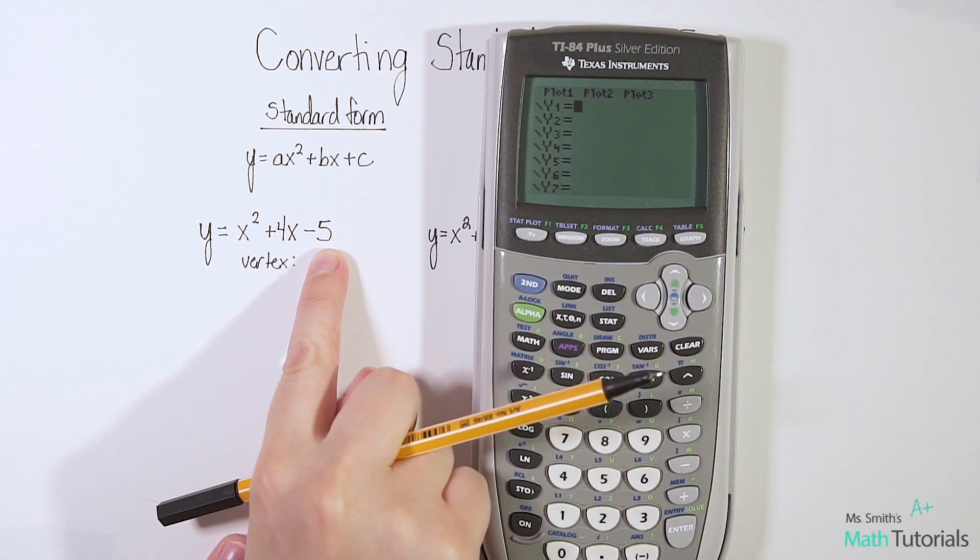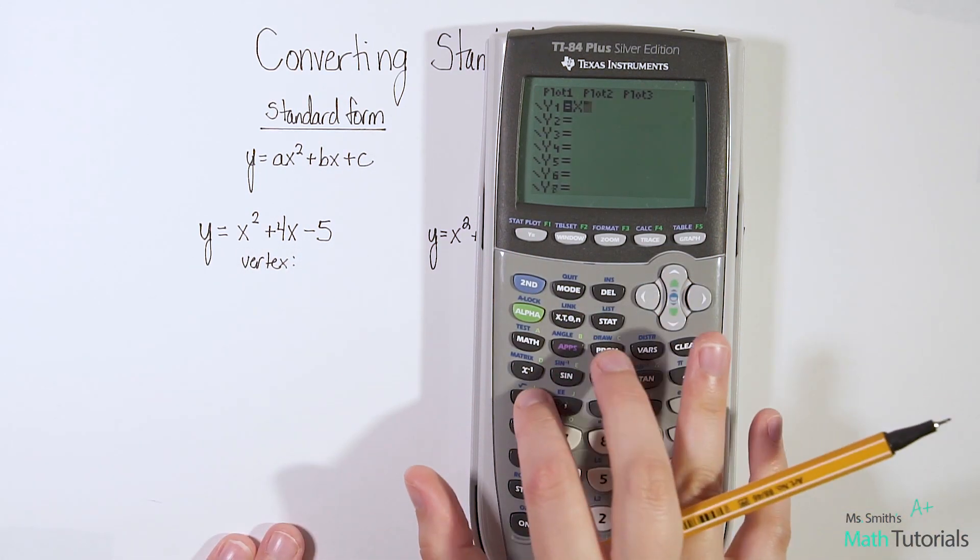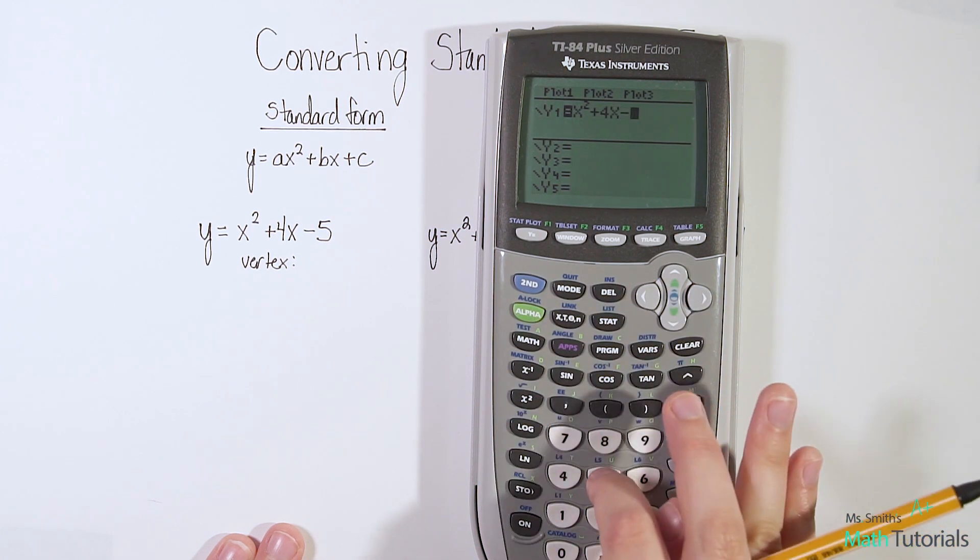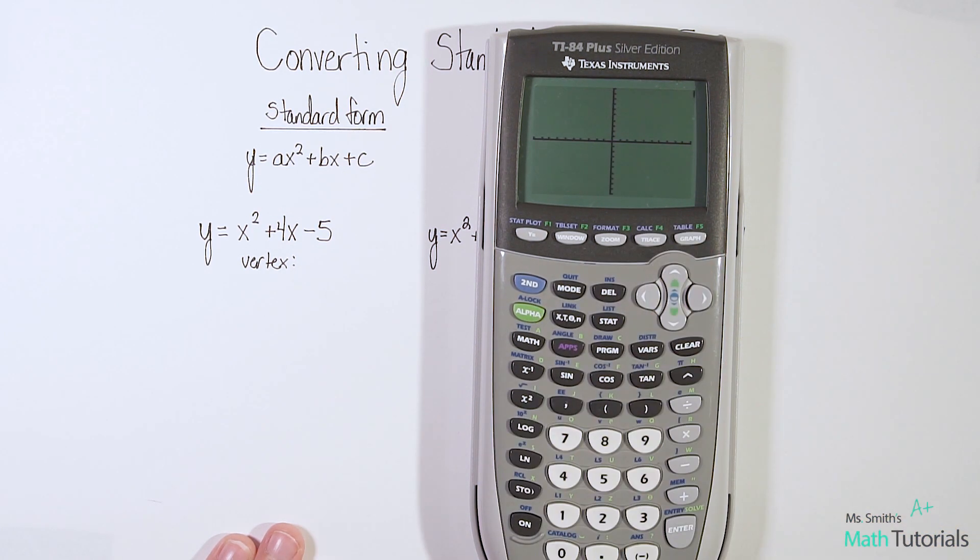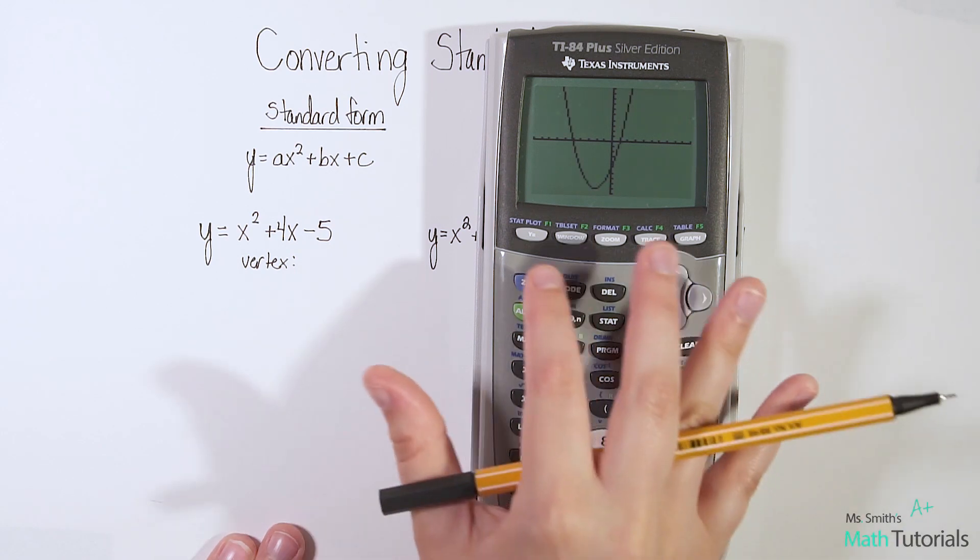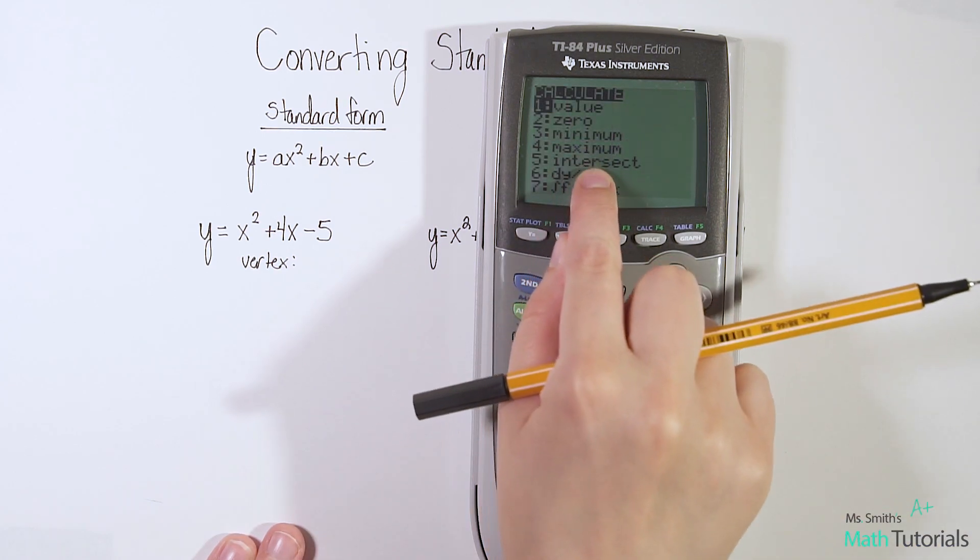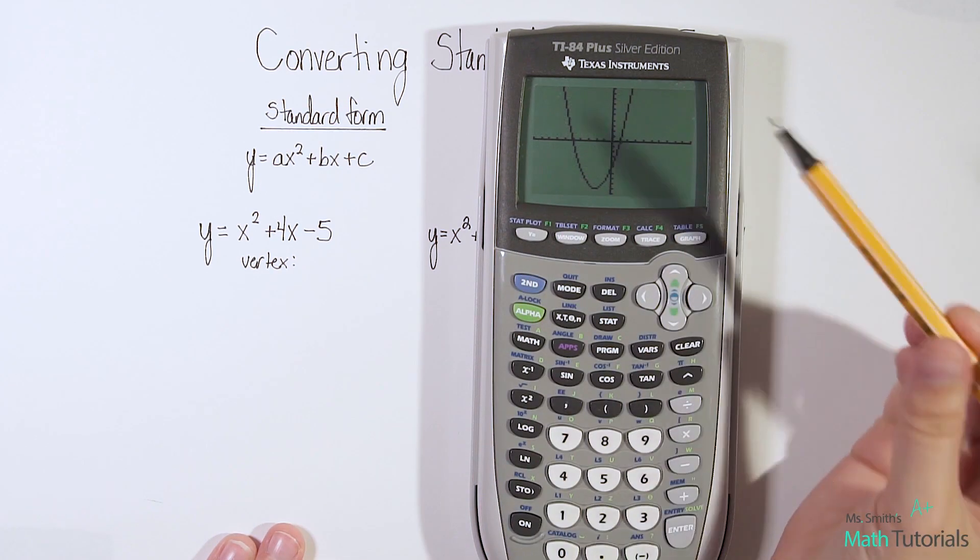We go to y equals and we type in what we've been given: x squared plus 4x minus 5. I want to look at the graph picture right there. So to find the vertex, I hit second trace. And I have to ask myself, is it a minimum or a maximum? So let me look at the picture again. This is at the lower end of the graph. It's a u shape, so that means this is a minimum.